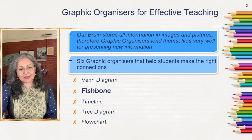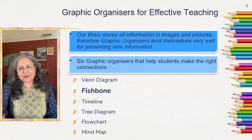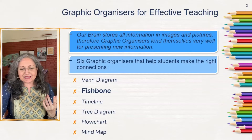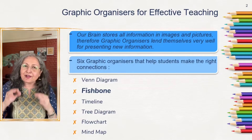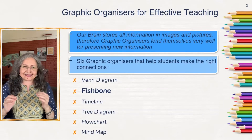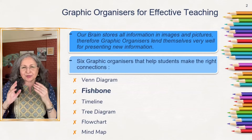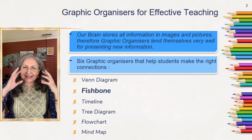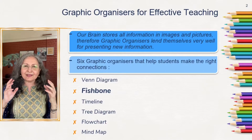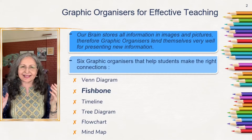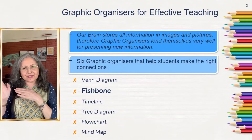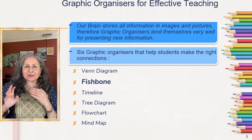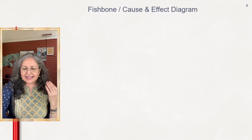Today we are going to be talking about another graphic organizer. As discussed in the last episode, we did the Venn diagram, and now we are taking you through the graphic organizer of fish bone analysis. It is an analysis because you're trying to find out why a certain thing happened — what were some of the causes that led to a problem — and therefore it's also known as a cause and effect diagram.